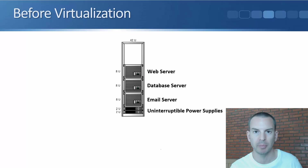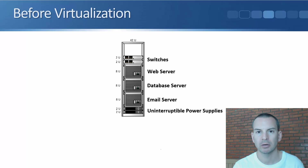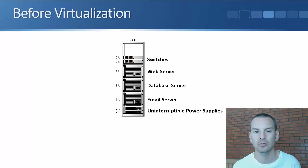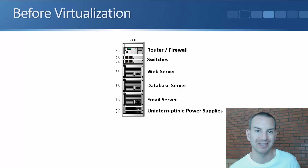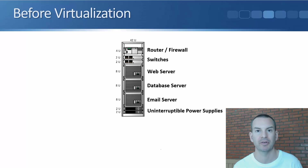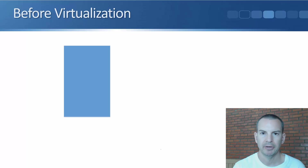We also had our own web server. We needed power for all the servers, so we had a couple of uninterruptible power supplies — these provide power and if the grid goes down, the batteries continue providing power for a period of time. We also had switches for connectivity between the servers and to the PCs in our office. We needed connectivity to the internet as well, so we had a router and a firewall, possibly with redundancy.